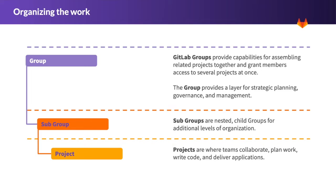To get started, let's talk about how to organize your work within GitLab. At the top level, groups allow you to assemble related projects together and nest subgroups. Groups are useful for allowing you to roll up analytics from downline projects for greater visibility, and also to define a top-level configuration for user access that's inherited by subgroups and projects.